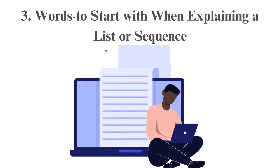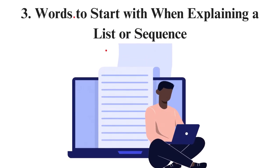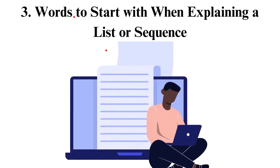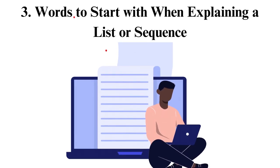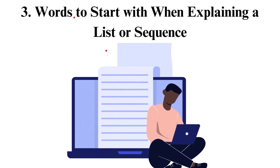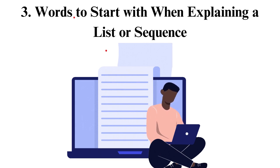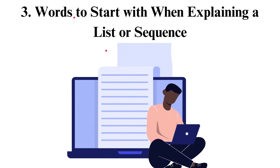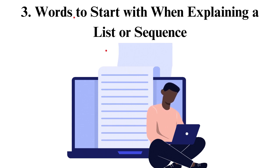3. Words to start with when explaining a list or sequence. When writing an essay about a series of events or a list of items, it is vital to use sentence starters suited for this kind of essay. Some of these sentence starters are: next, later, afterward, subsequently, one, two, three, etc., first, second, third, etc.